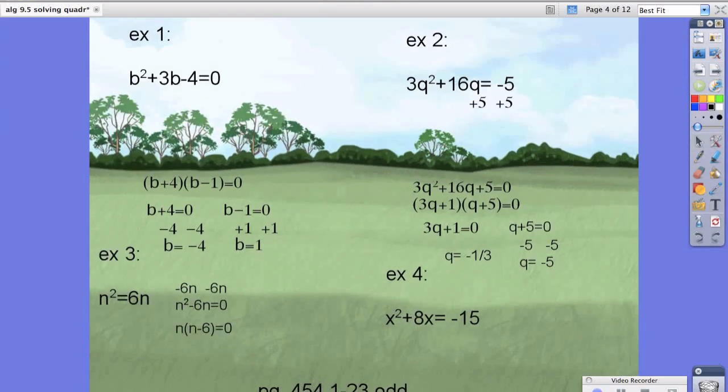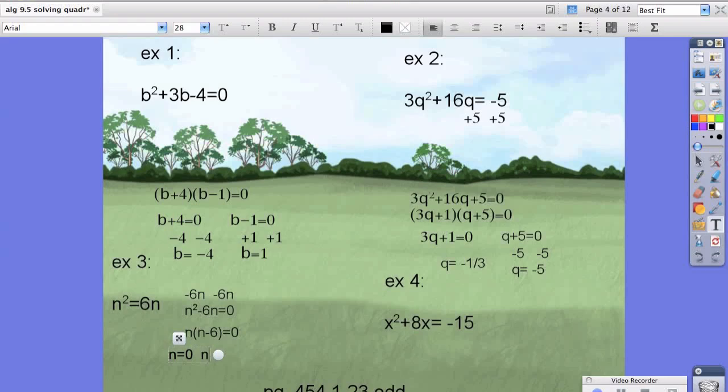Remember, we're multiplying two things, n and n minus 6, and somehow it's equal to zero. So we'll do our typical branching: n equals zero and n minus 6 equals zero. Obviously, this one is already solved for. This one, we have to add 6 to both sides, and we're left with n equals 6 as our second root or solution or zero.